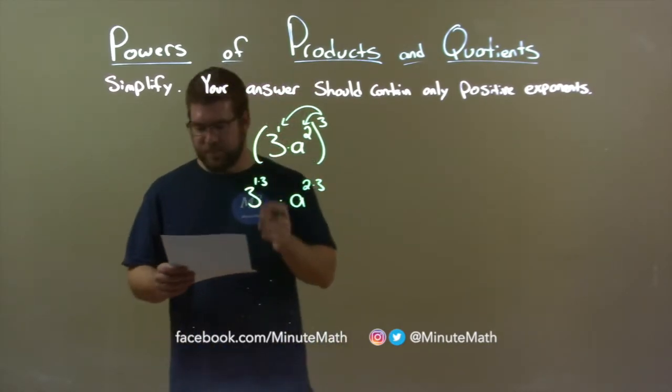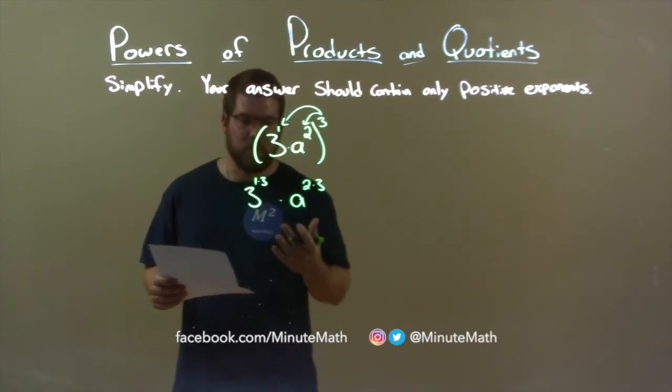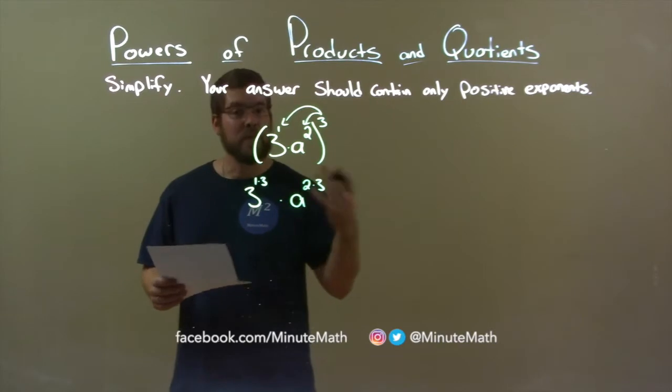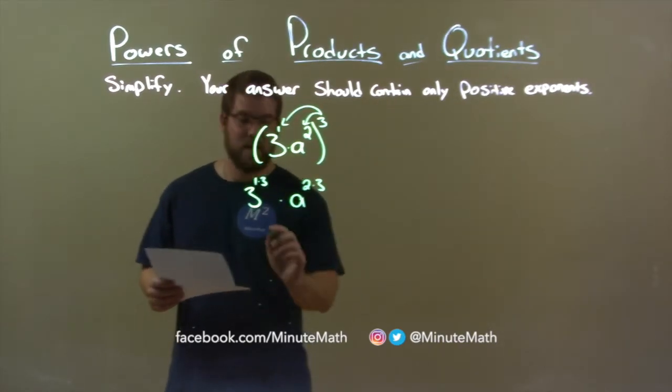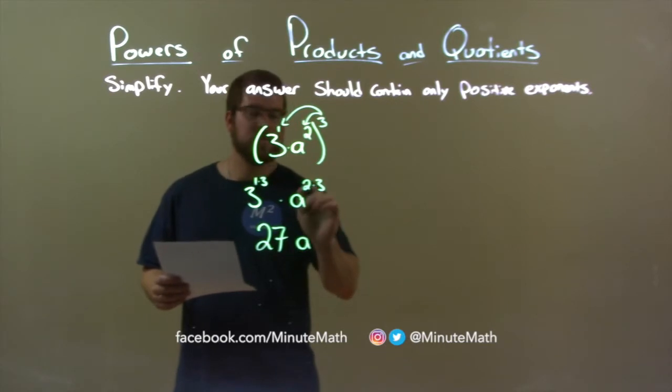Now we can simplify. Three to the one times three power is three to the third power. One times three is three, and three to the third power is 27. A comes down, and two times three is six, a to the sixth. So our final answer is 27a to the sixth power.